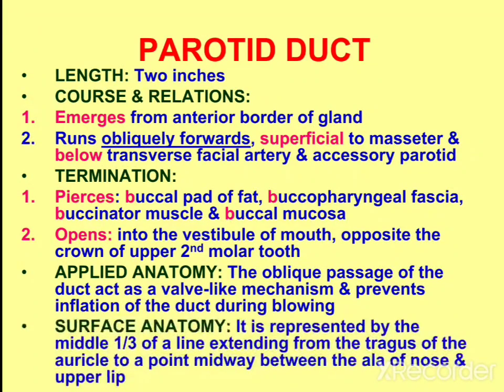The surface anatomy of the parotid duct is represented by the middle one third of a line which extends from the tragus of the auricle to a point midway between the ala of the nose and the upper lip. This demarcates the parotid duct.